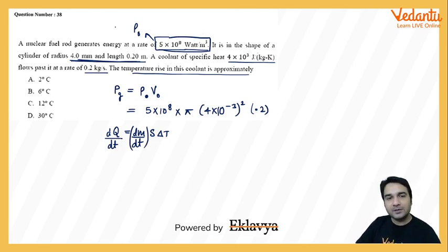In this case, what is dq by dt? dq by dt equals dm by dt times s times delta t. Basically, dq by dt is nothing but power generated. You can see that both equations represent the same quantity.